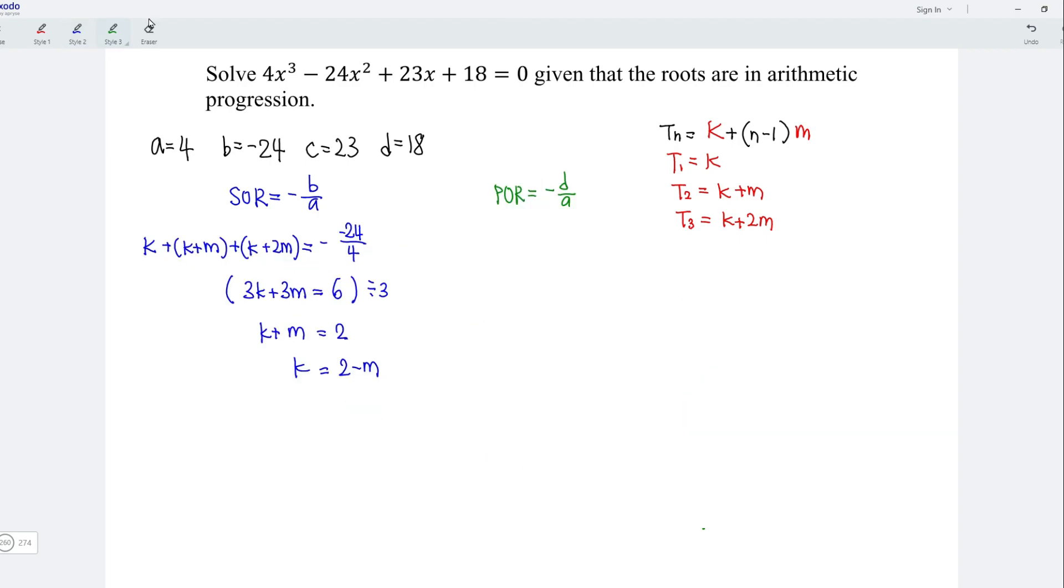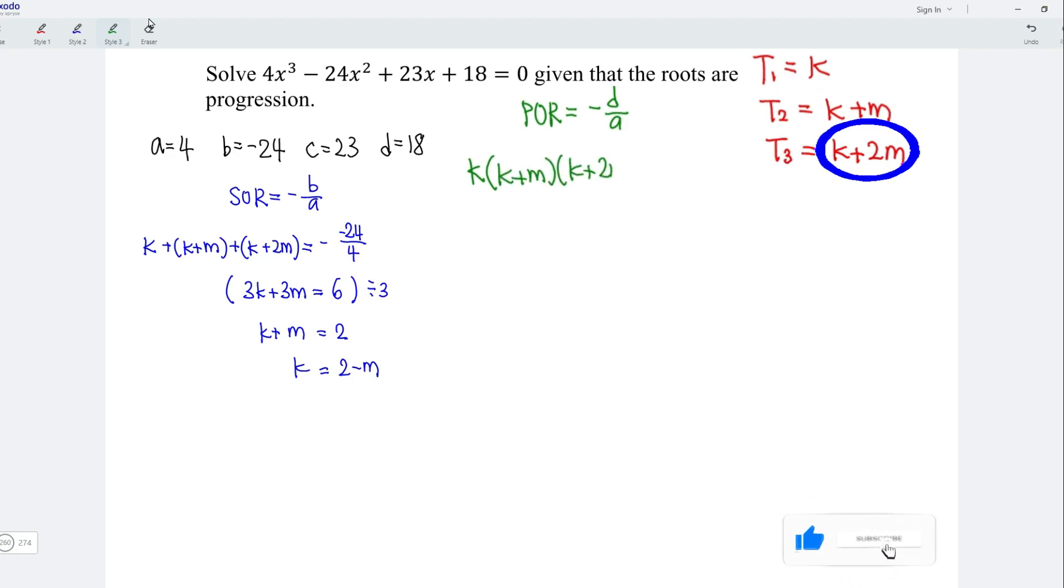On the other hand, if we take K, multiply K plus M, multiply K plus 2M is equal to negative 18 over 4. Let's replace K with 2 minus M. And simplify the right-hand side, we obtain negative 9 over 2.